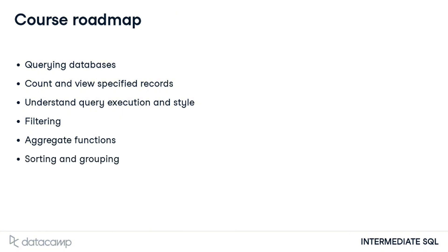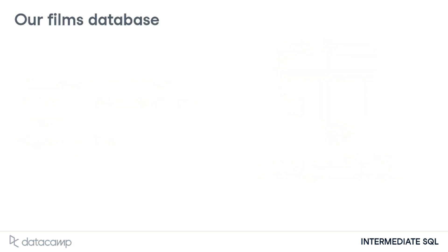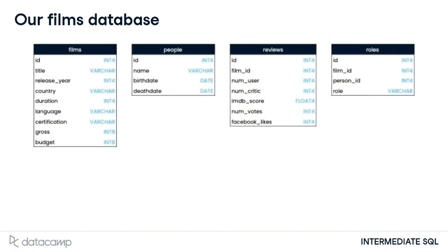We'll be using PostgreSQL throughout. We will work with a Films database containing four tables: Films, Reviews, People, and Roles.